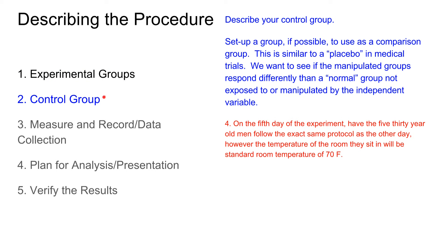In our procedure we should also describe a control group if possible. This is a standard treatment — ideally we remove the independent variable, but in this case we don't remove temperature. Instead, we use a standard room temperature of 70 degrees as a baseline to compare the experimental groups to.